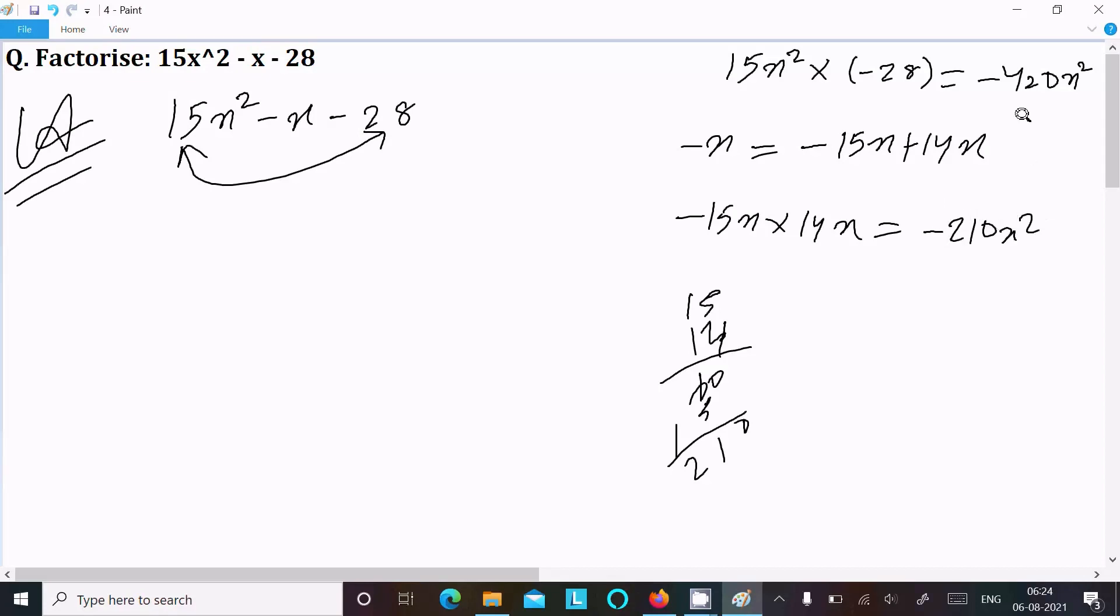So here if you try to compare -420x² with -210x², both are not same, so we cannot take this combination. If that same, then we can take it. If that not same, we cannot take this combination.